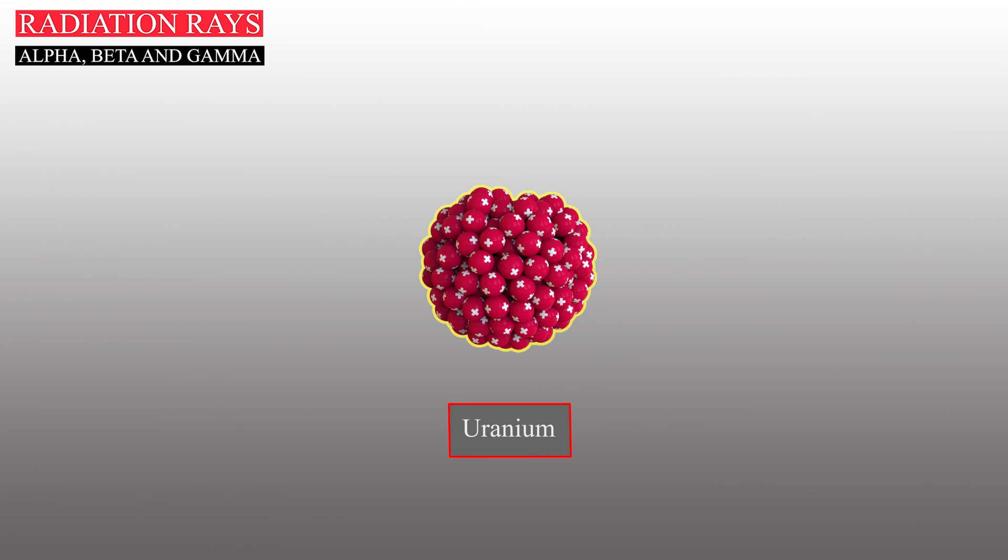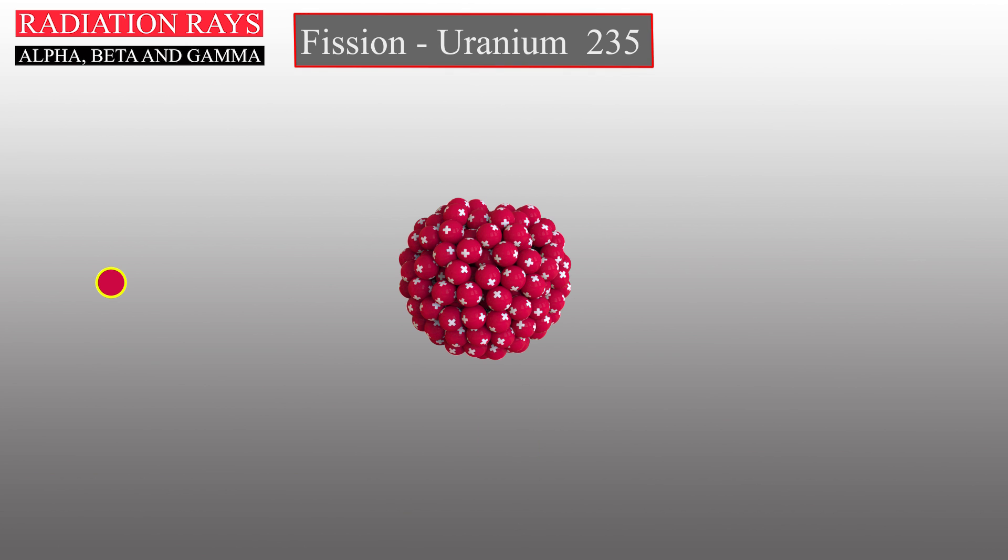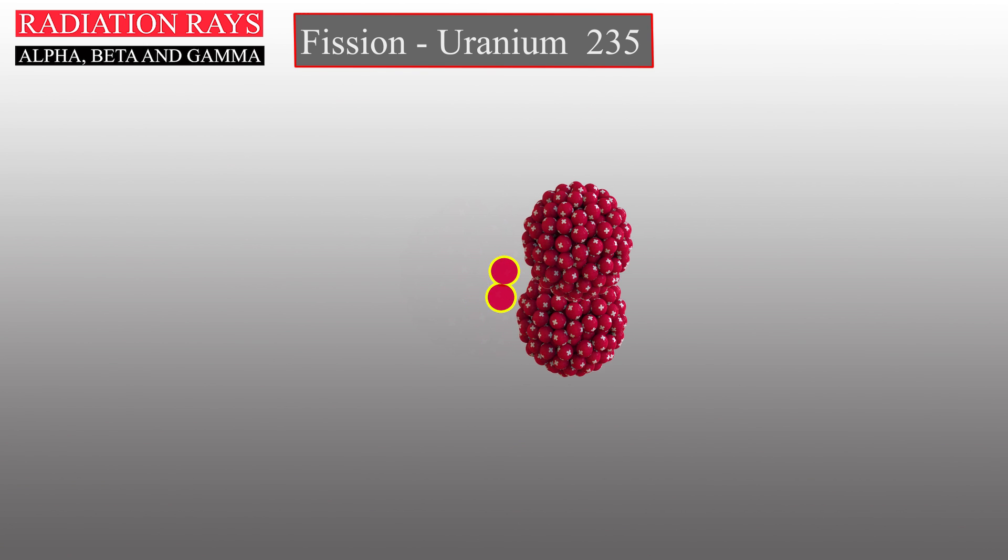This equilibrium is unstable in uranium, so when a fast-moving neutron collides with the uranium-235 nucleus, it is stretched into an elongated shape.